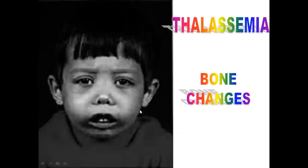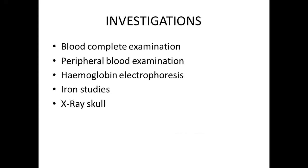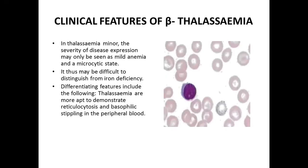This is the chipmunk facies of a child with beta thalassemia major — the face resembles that of a monkey. For investigations we perform a complete blood examination, which will show microcytic hypochromic anemia. We advise a peripheral smear examination, and to confirm the hemoglobin defect we advise hemoglobin electrophoresis. Iron studies are advised to exclude iron deficiency anemia. Skull X-ray and vertebral X-rays are done to assess skeletal deformities, and CT scan to exclude masses from extramedullary hematopoiesis.